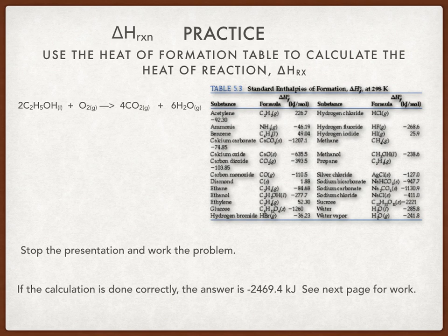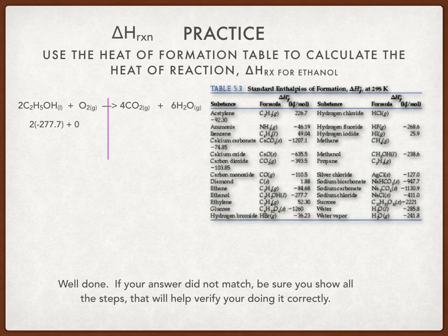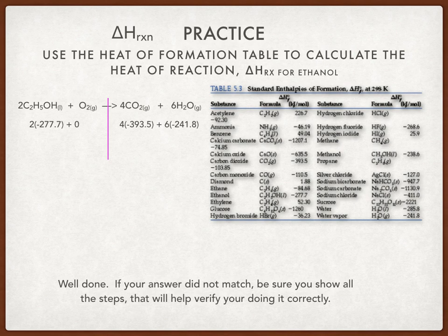Let's see the work. We're going to have two (from the coefficient) times negative two seventy-seven point seven, plus zero — notice that oxygen is all by itself so it has a value of zero. Then for products we'll have four times the value for CO₂ plus six times the value for H₂O, which is four times negative three ninety-three point five plus six times negative two forty-one point eight. Two times negative two seventy-seven point seven gives you negative five fifty-five point four.